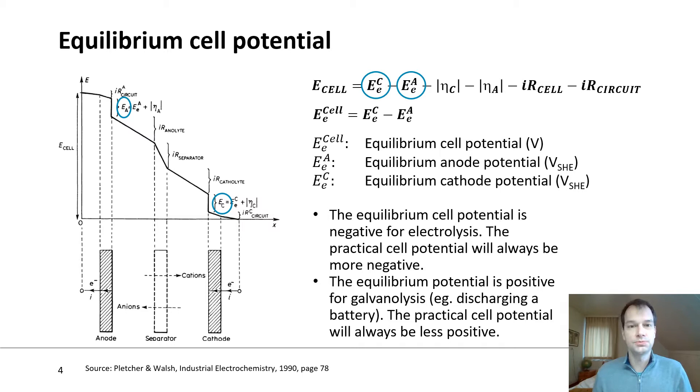What is important to know is that if you have an electrolysis process, we always say that the equilibrium cell potential is negative, whereas if you have the reverse of an electrolysis process, what we call a galvanolysis process, you have a positive cell potential.